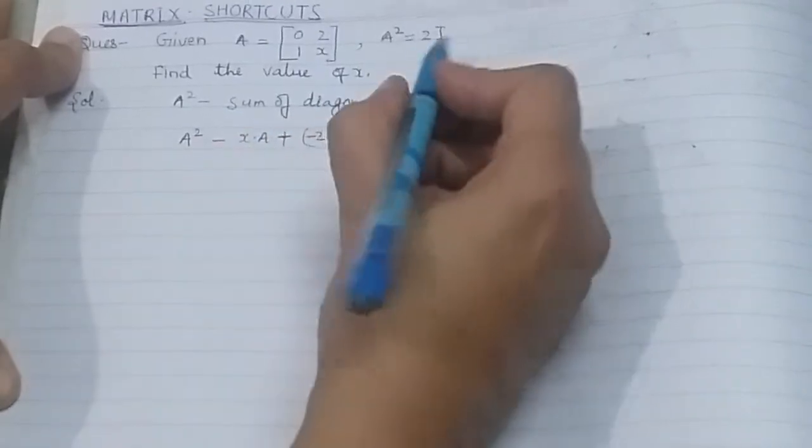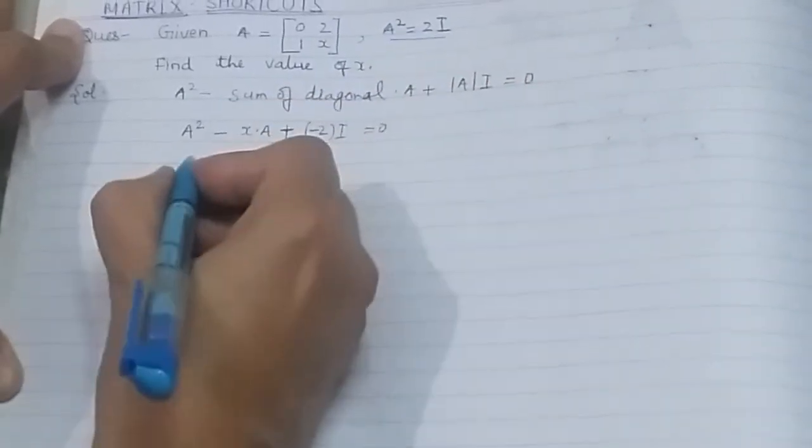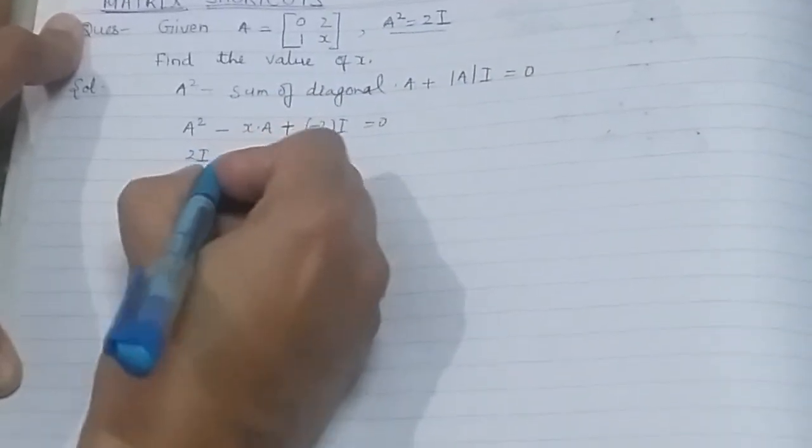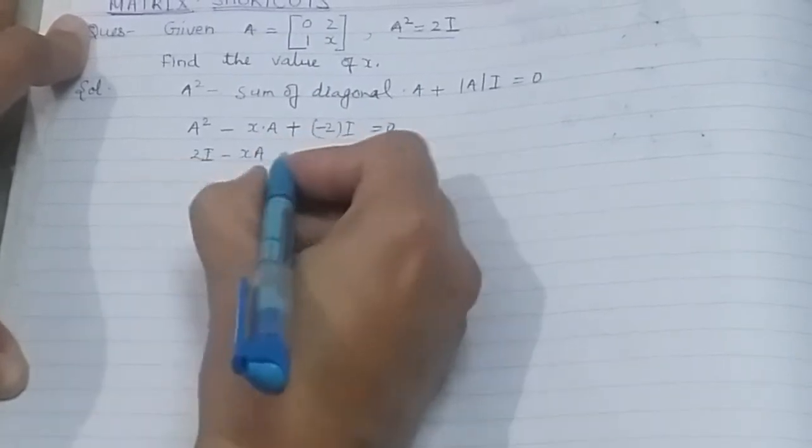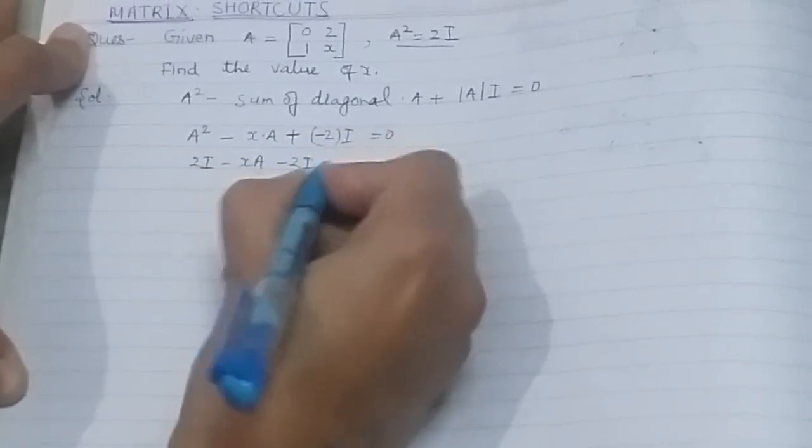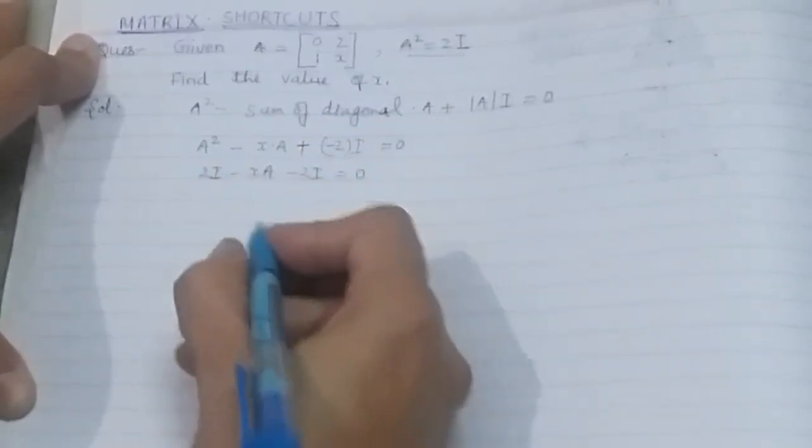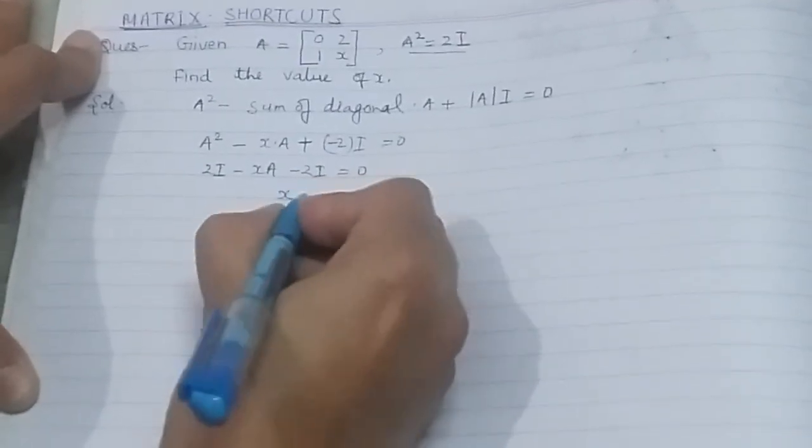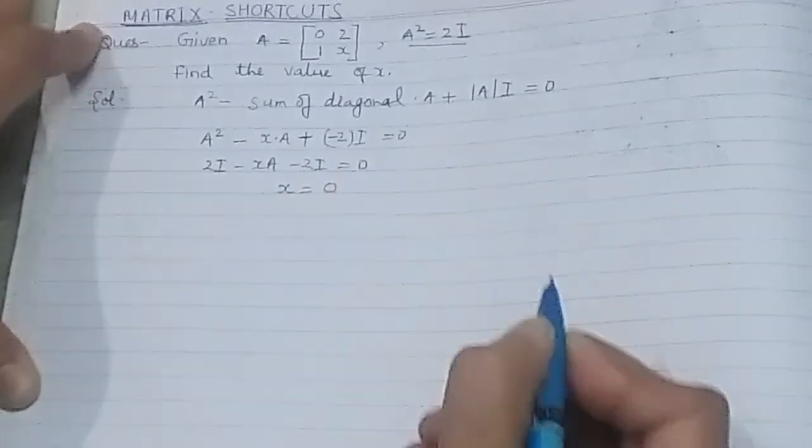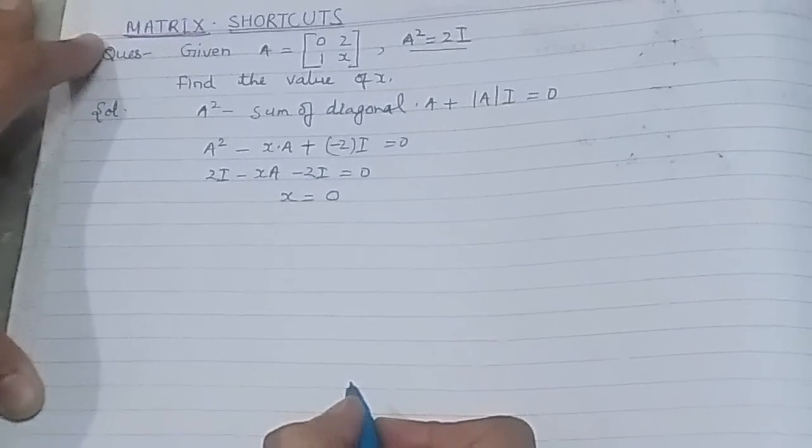In place of A², I will put the given value 2I. So this is 2I minus xA minus 2I equals 0. This gives me the value of x is 0. That's all.